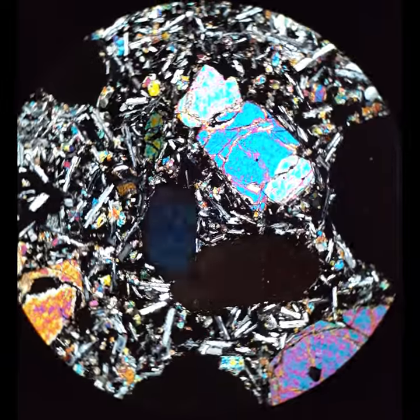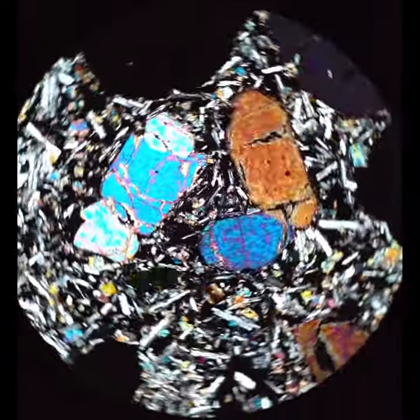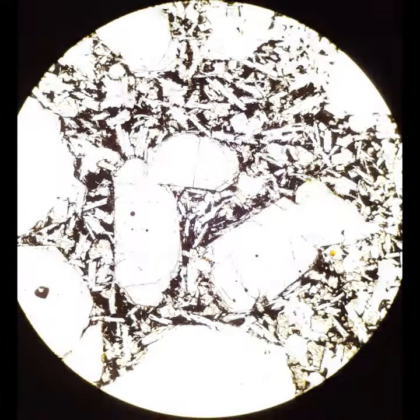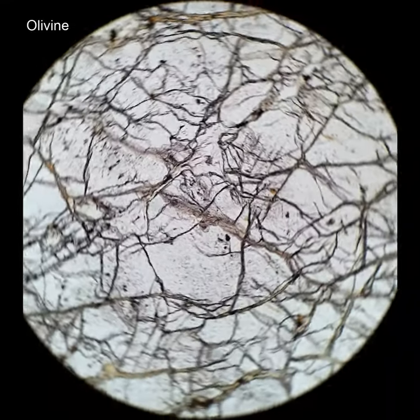And it's that high interference colors, the parallel extinction, also the relatively high relief that helps identify these as olivine. This is a peridotite.